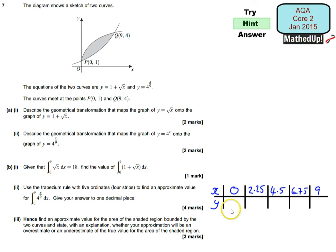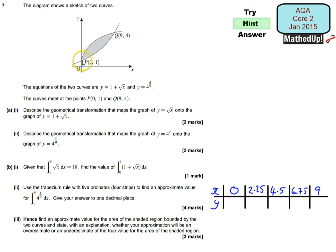That's five ordinates split into four strips. We then work out the y coordinates for each of these and use the trapezium rule formula to get an approximate value for the integral. Part 3 says hence find an approximate value for the area of the shaded region bounded by the two curves, and state with explanation whether the approximation is an overestimate or underestimate. Because the curve is bending downwards, the trapezium rule will be overestimating — so what does that tell us about the area of the shaded region?